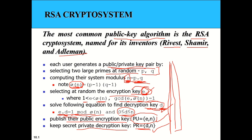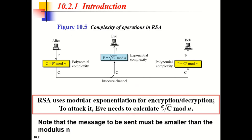Now we perform encryption and decryption. For encryption, we use the expression: ciphertext C = P^E mod N. We have the value of N from the key generation process, the value of E (the public key), and the plaintext P, so we can calculate the ciphertext.